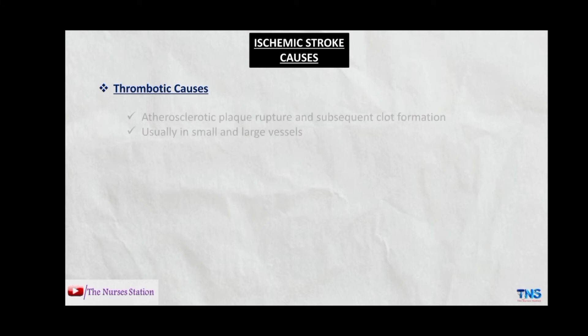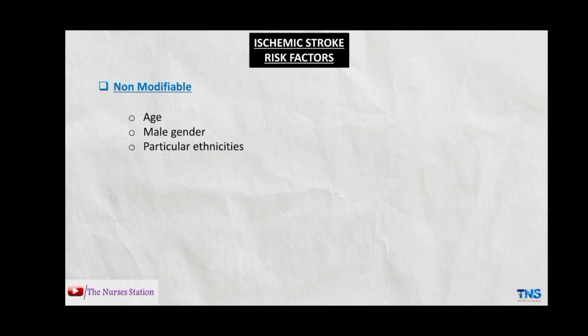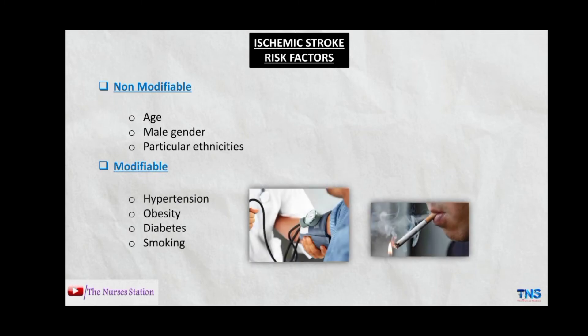The thrombotic causes include clot formation due to the rupture of an atherosclerotic plaque, and usually occur in small and large blood vessels. Regarding risk factors of ischemic stroke, there are two types: non-modifiable, over which we have no control, and modifiable. Non-modifiable risk factors include age, male gender, and particular ethnicities. Modifiable risk factors include hypertension, obesity, diabetes, and smoking.